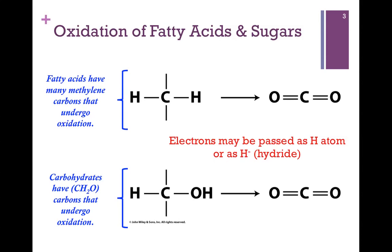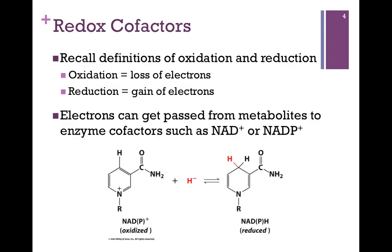In oxidation, we're extracting electrons, and those electrons may be passed as a hydrogen atom — that is, as a proton and an electron — or as a hydride ion, which is a proton and two electrons.